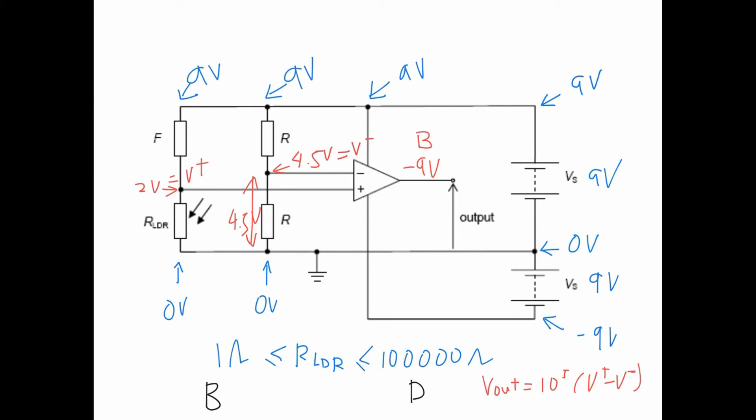But when it's dark, the resistance, the LDR will increase. So you will carry more PD. So let's say the PD shoots up to 6 volts. Then you substitute into this equation. Your V plus is 6 now. V minus is still 4.5. You get positive. So now you get positive 9 volts when it's dark.